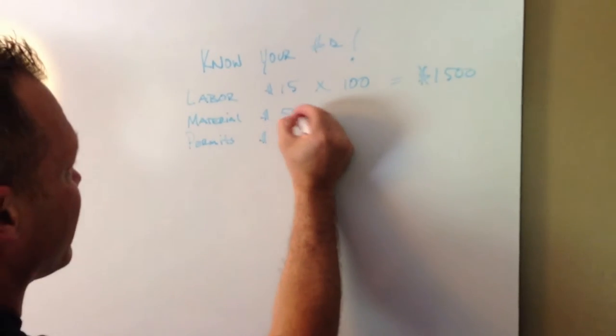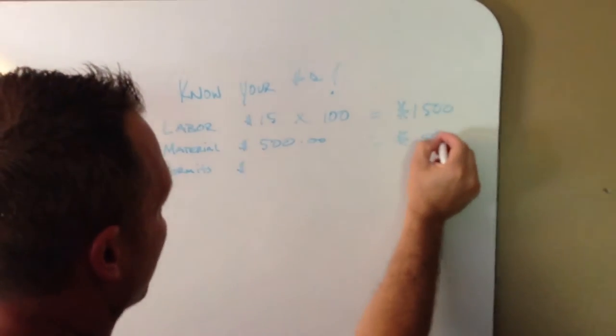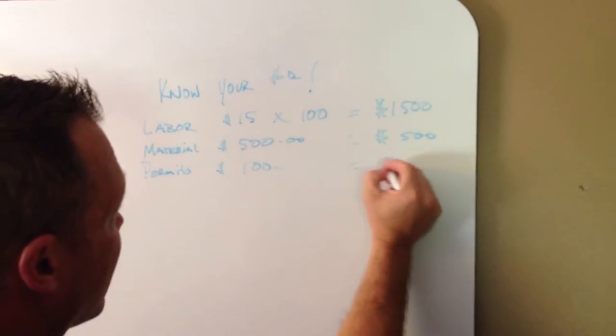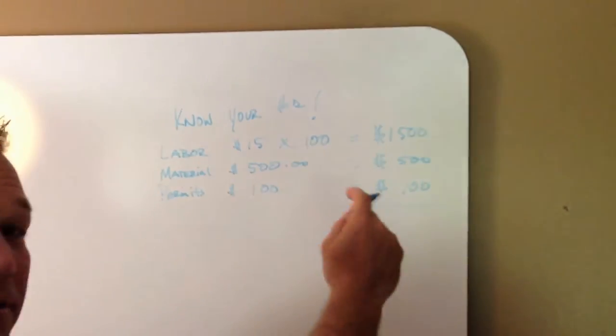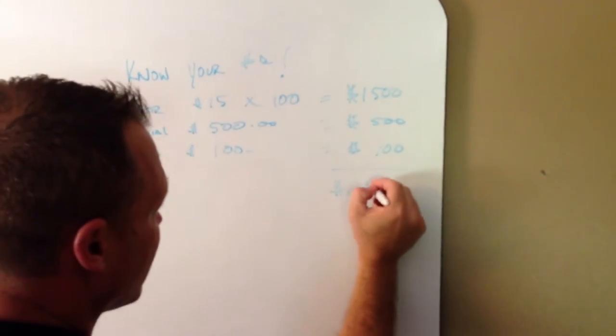Let's say material for your deck was $500. Say it was $100 for a permit. These numbers here, $1,500, $500, and $100 amount to $2,100.